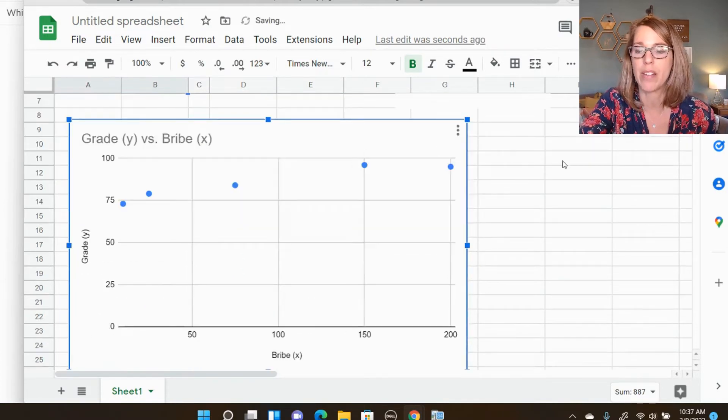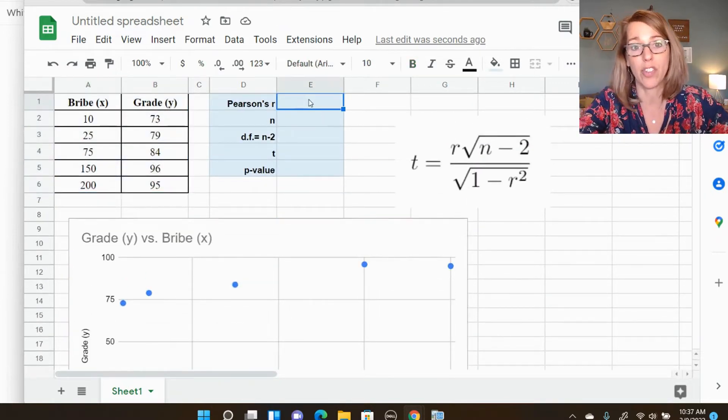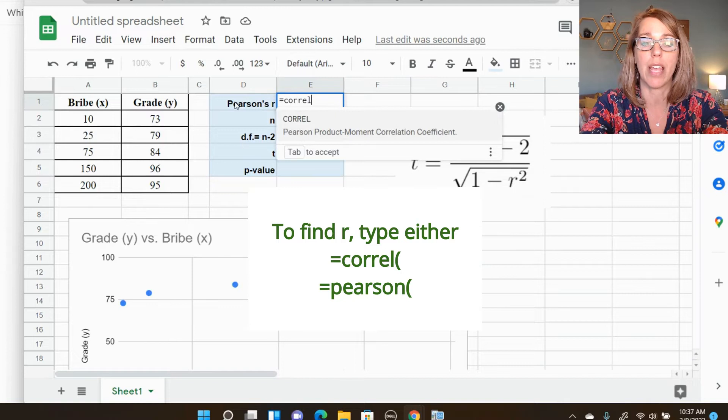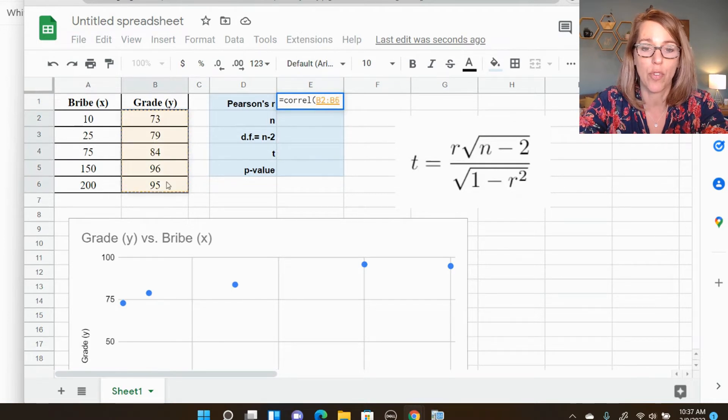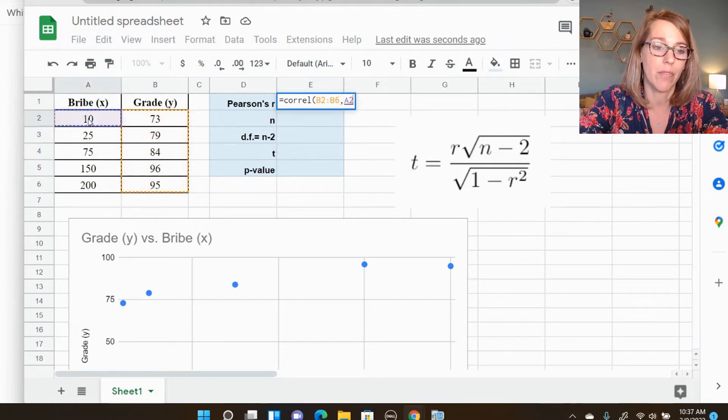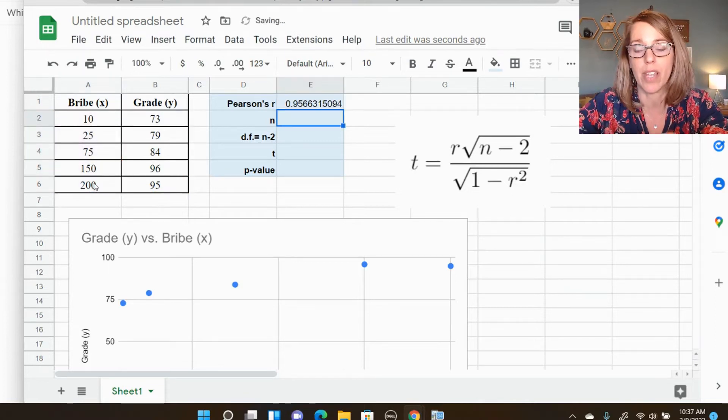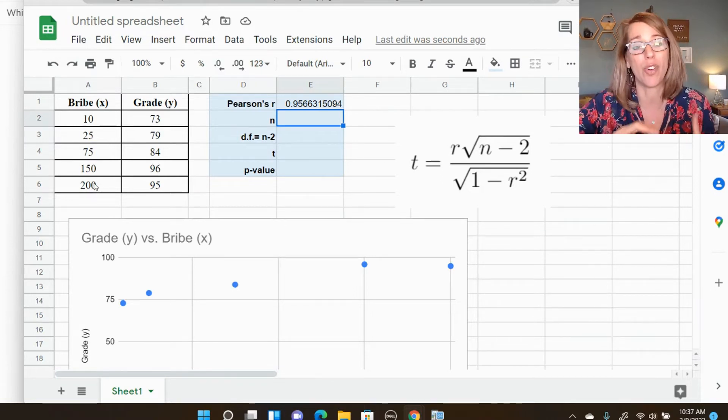Let me move this out of the way, and let's go ahead and find our other measures. I want to start by finding our correlation coefficient. This is Pearson's R. To do this, I'm going to type equals C-O-R-R-E-L. You can also do Pearson, P-E-A-R-S-O-N. So I'm going to go correlation, and then it tells me that I want to go ahead and grab my Y data. So I'm going to grab grades, clicking and dragging, and then a comma, and then my X variable. So it's going to be my bribe, again, clicking and dragging. You don't need to hit the parenthesis at the end. So we've got a 0.9566. This is really close to one. Looks like a really strong correlation.